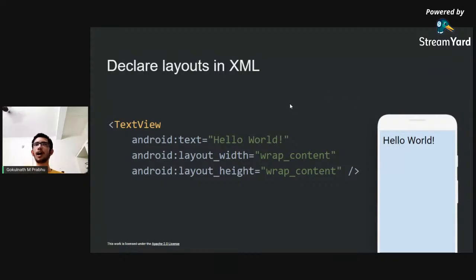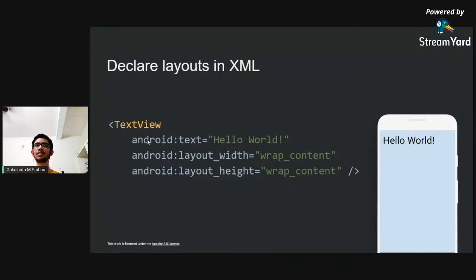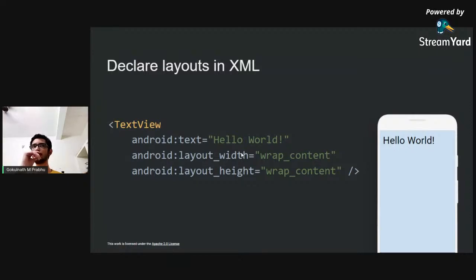So how do you actually make these layouts? We'll be using XML — Extensible Markup Language. You have tags like the text view tag, and each tag has attributes such as android:text and layout_width or layout_height. XML looks similar to HTML if you're familiar with that. So we'll be using XML to define our layouts.